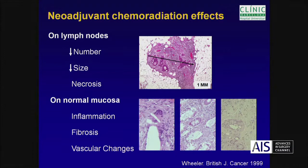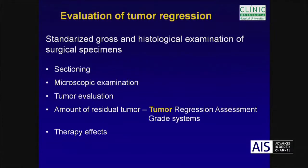On normal mucosa, we also see some changes: inflammation, fibrosis, and vascular changes. We have to use standardized protocols in gross sectioning, as Mariana says, but also in microscopic examination, because we have to evaluate the tumor and tell you the amount of residual tumor.